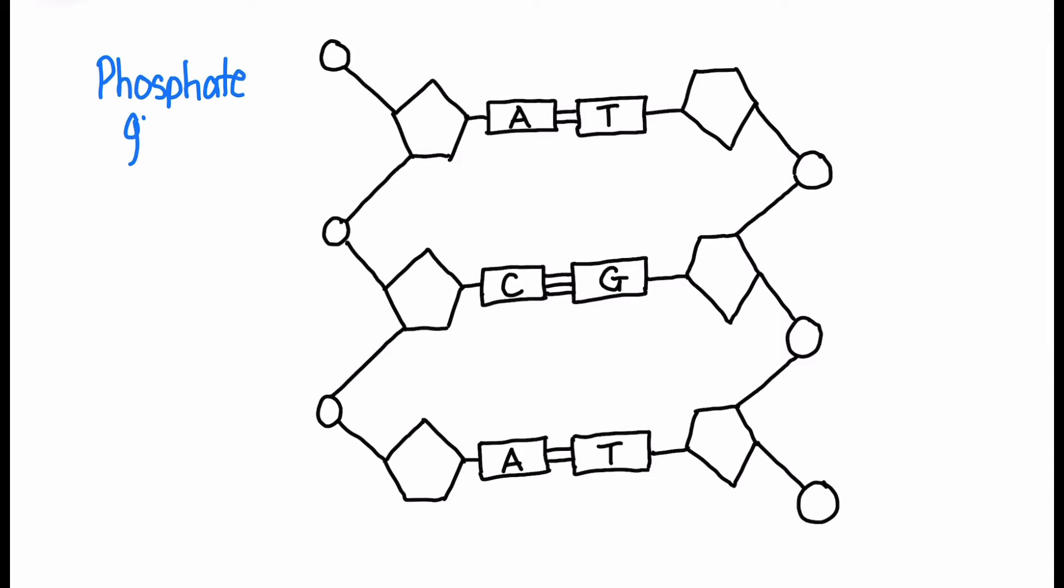The bonds in the middle are hydrogen bonds. I'm going to label them later. Notice that between the A and the T is two hydrogen bonds. C and G, three hydrogen bonds. However, the IB does not expect you to memorize the number of hydrogen bonds. So ultimately, as long as you label them as hydrogen bonds, you should be just fine there.